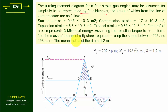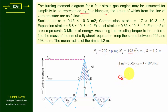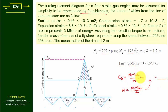Each square meter on the diagram represents 3 mega Newton meters, so the scale factor is 1 m² equals 3×10⁶ Newton meters. The speed of the flywheel varies between 202 and 168 RPM. From this, N equals (N1 + N2)/2 equals (202 + 168)/2 equals 185 RPM, and CS equals (N1 - N2)/N equals 0.02.